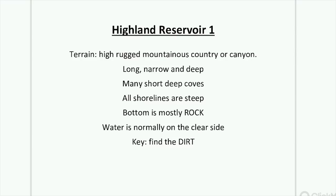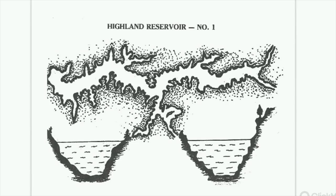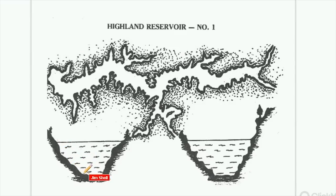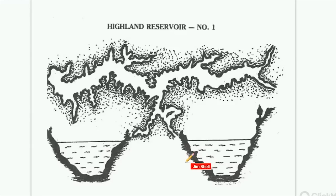Steve Craig primarily fishes highland reservoirs, and he can probably shed some light on this during questions and answers. Right out of the home study course, here's what Buck's typical highland reservoir looks like. In some cases, the steep shoreline will be smooth; on the other side, you'll have ledges, which will act as a migration route for fish. All these pictures for this and other reservoirs are from Google Maps — if you go to settings on Google Maps, you can have it show the terrain, which really helps you identify what type of reservoir you have.